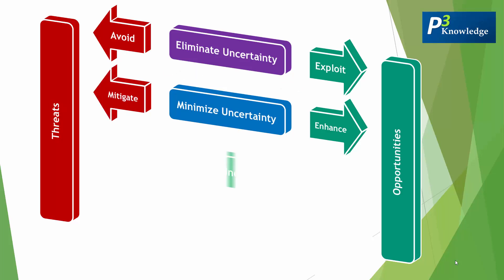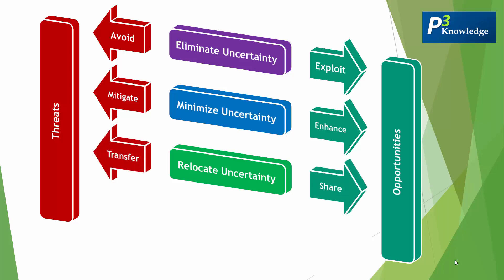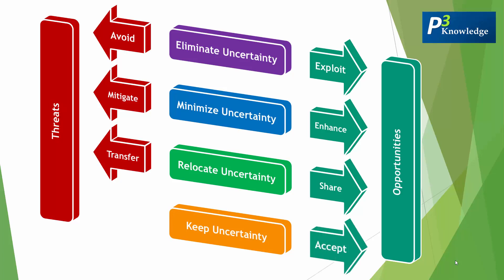The third principle is to relocate uncertainty — trying to put part or all of the risk onto a third party. In the case of positive risk, we call it share, and in the case of a threat, we call it transfer. Share means you join with a third party, while transfer means you give it away for them to take responsibility. The fourth principle is to keep uncertainty — leave it as it is. In the case of opportunities, it's called accept, and the same goes for threats — also called accept.